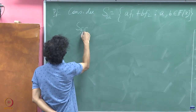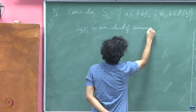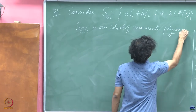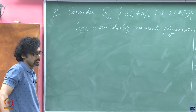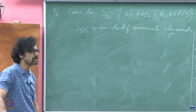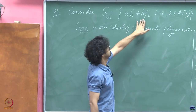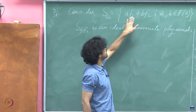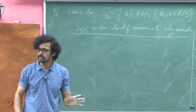Is it an ideal? If you add any two elements, A1·F1 + B1·F2 and A2·F1 + B2·F2, you get (A1+A2)·F1 + (B1+B2)·F2, so the sum lives inside this set. For the product with an arbitrary ring element G: (A·F1 + B·F2)·G = (AG)·F1 + (BG)·F2. Call AG as Â and BG as B̂, then it is just Â·F1 + B̂·F2. So this is an ideal.